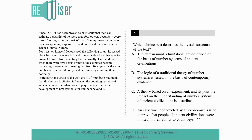Since 1871, it has been proven scientifically that man can estimate a quantity of no more than four objects accurately every time. The English economist William Stanley Jevons conducted the corresponding experiments and published the results in the science journal Nature.